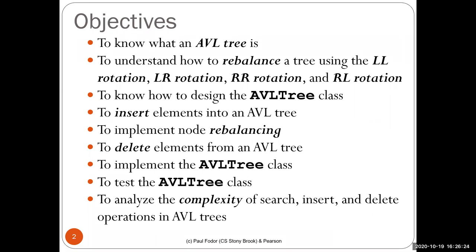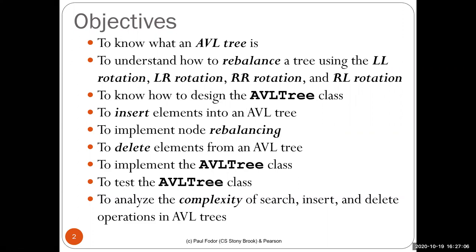We'll learn how to insert nodes, which is done the same way as in binary search trees, only followed up by rebalancing. Then we'll do a method for deletion, which is the same as in binary search trees: if there is no left child, the right child replaces the deleted node. If there is a left child, we find the rightmost subchild of that left child. There is one step different for deletion in AVL trees — we re-label nodes with the weight of that node.